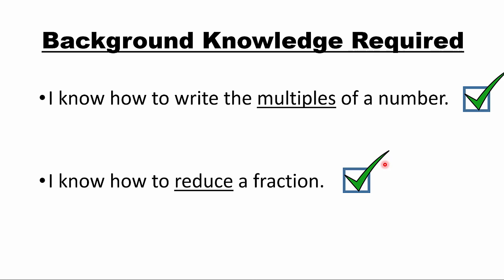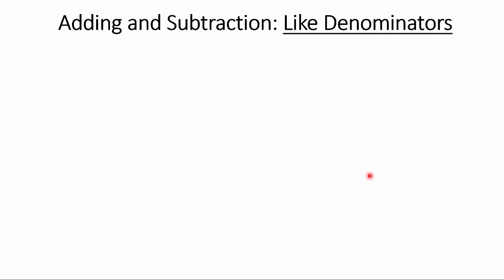Let's get started. Add and subtract like denominators — that's the first part. What does that mean? You see these two fractions: three-fifths and one-fifth. We're going to add them. Look at the denominators — they match, they're like denominators. Now if they're alike, it's pretty simple: you just add the numerators and you leave the denominators alone. Leave them as five — don't add the denominators.